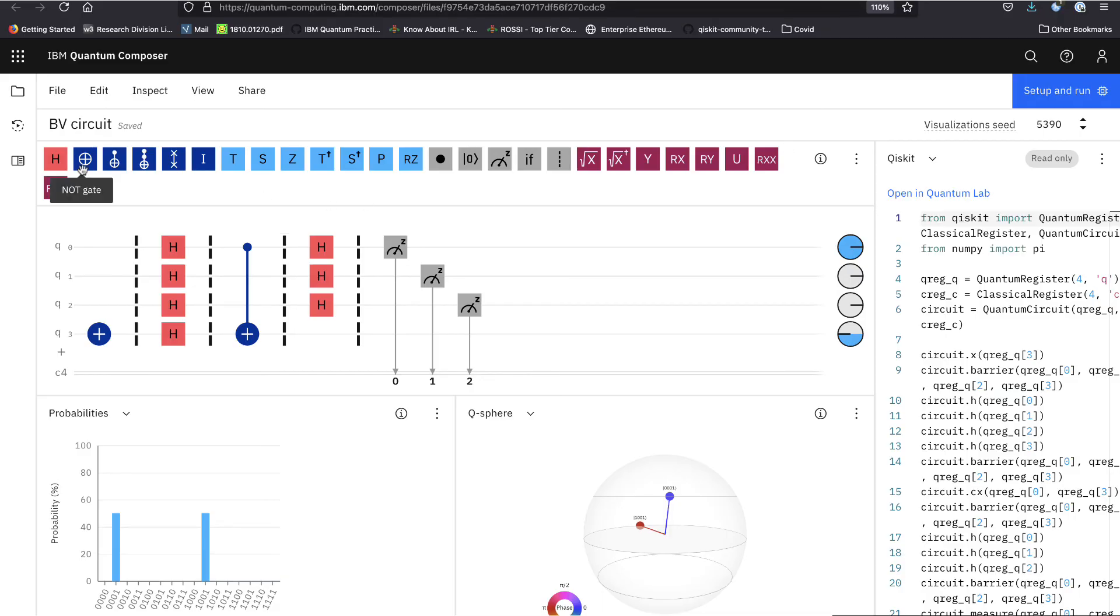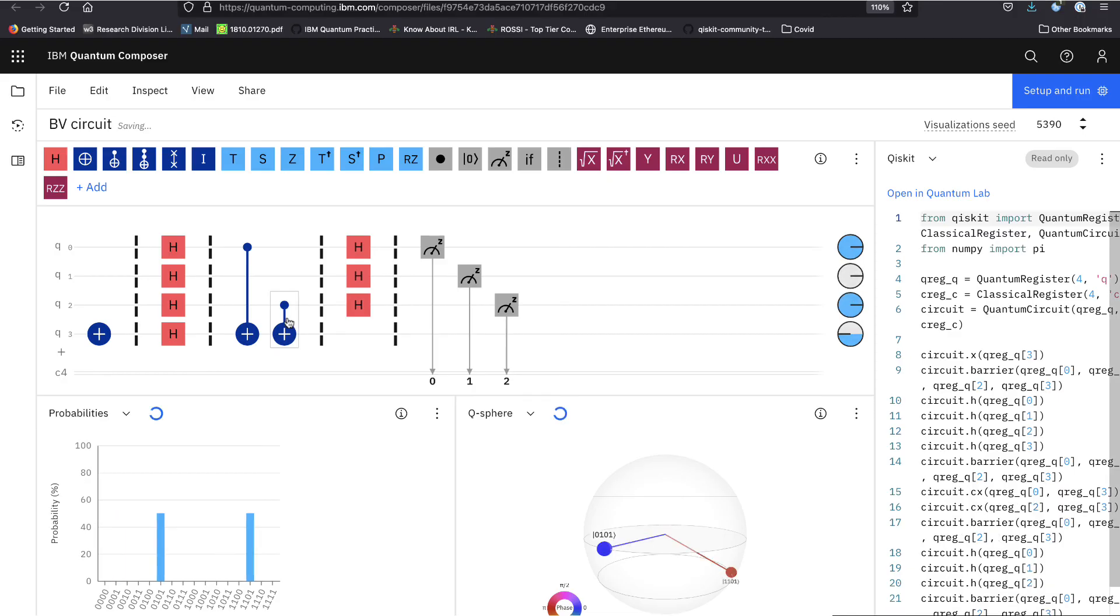And similarly, if we want to implement 101, it is just this. Because this is y xor x0 xor x2. So, this essentially says, it is y xor 1 dot x0 plus 0 dot x1 plus 1 dot x2.